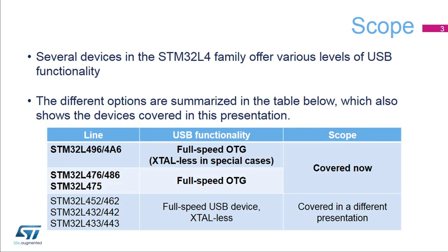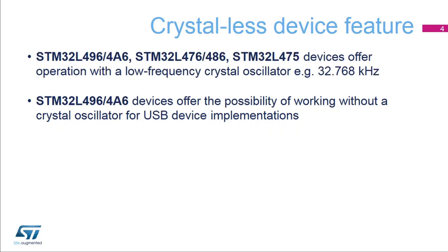This slide explains the range of USB interfaces within the STM32L4 product line. As shown, this presentation describes the full-speed on-the-go or OTG USB device interface supported in STM32L49X4AX and STM32L47X4AX devices. All devices with the FSOTG USB device interface can operate with a low-frequency crystal oscillator. STM32L496-4A6 devices also allow a USB device to be implemented without a crystal oscillator.